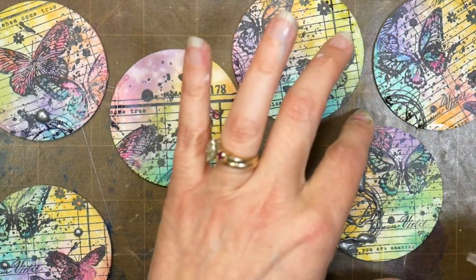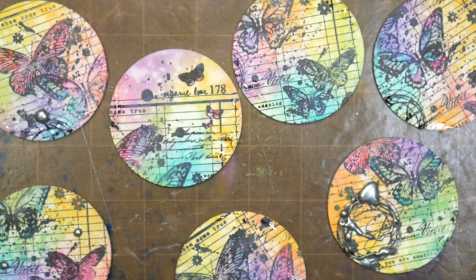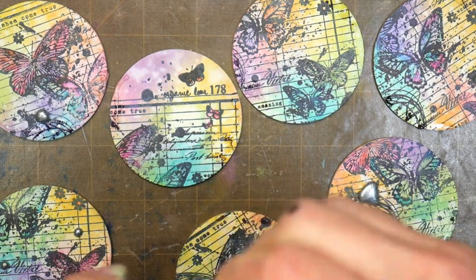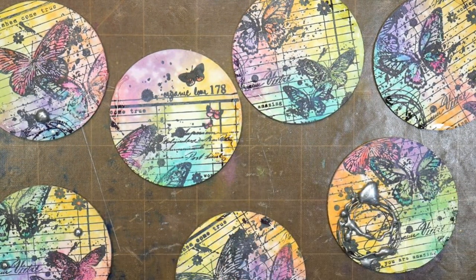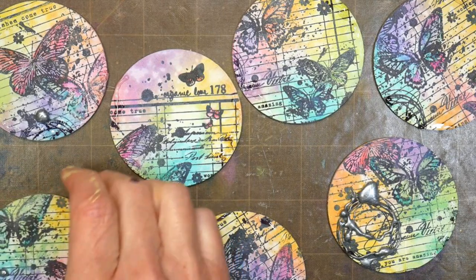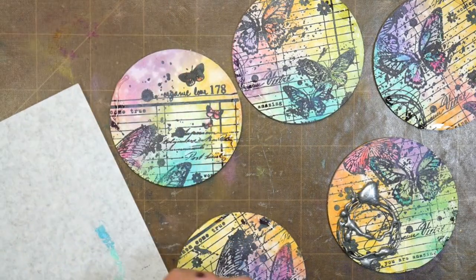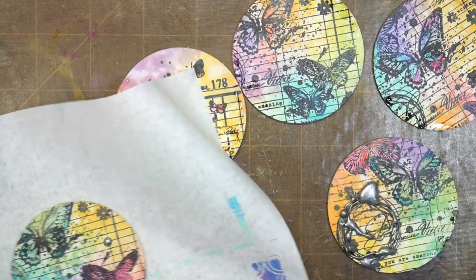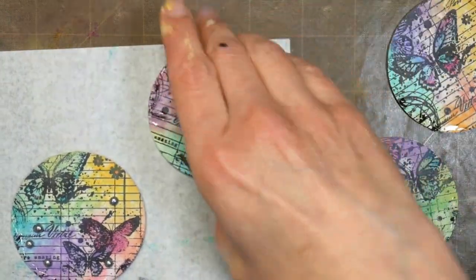If I had to do it over again, at this point before adding the glitter I would have sealed these coins, or actually probably before adding the embossing powder. You want an oil-based spray like a matte Krylon, not a water base where it's going to activate all of your distress oxide.